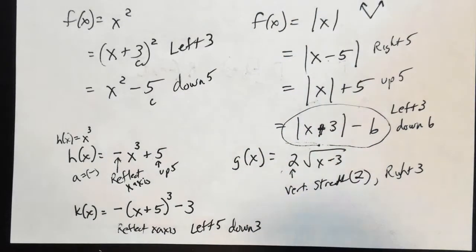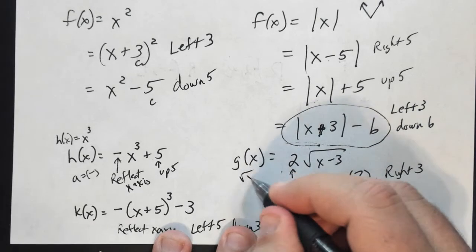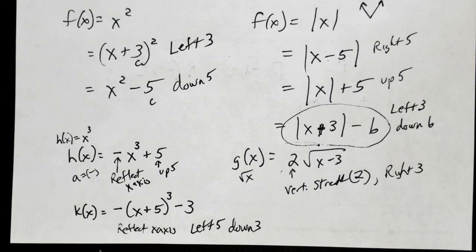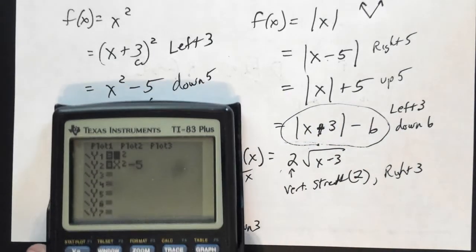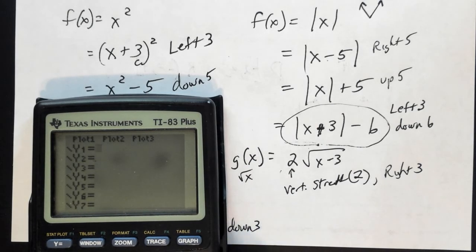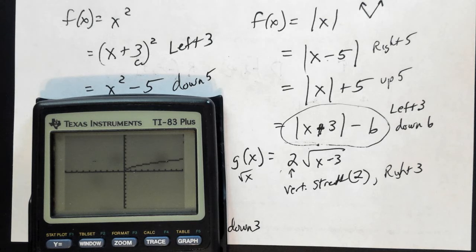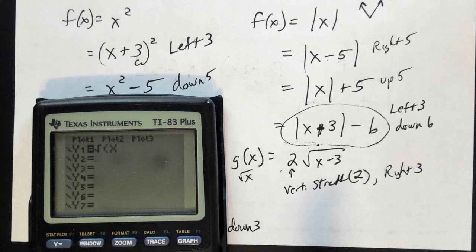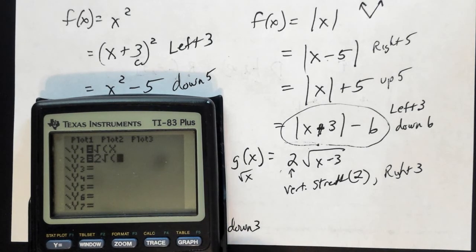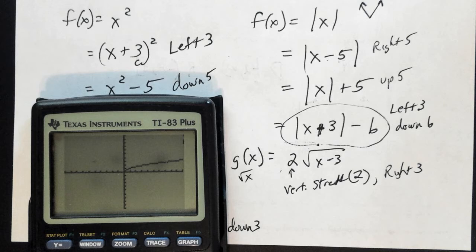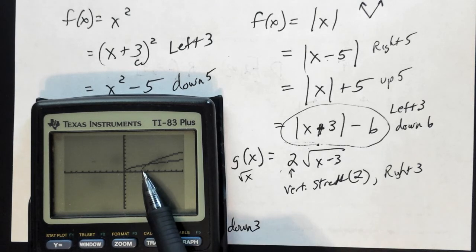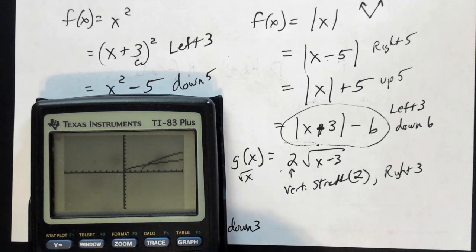The parent function for g is square root of x. In Y=, clear both entries and enter the square root of x first to remember what it looks like. Then in Y2, plug in 2 times the square root of (x − 3). Graph it — notice how it moved 3 to the right and is a little bigger because it's been vertically stretched.